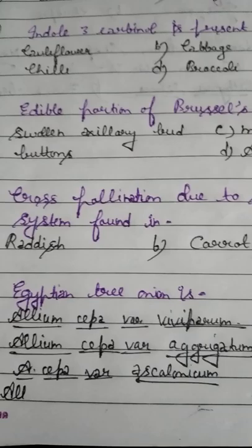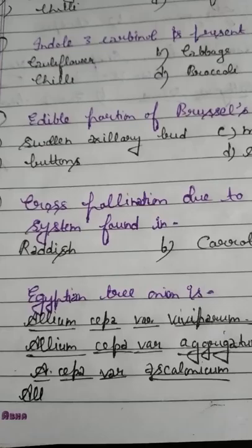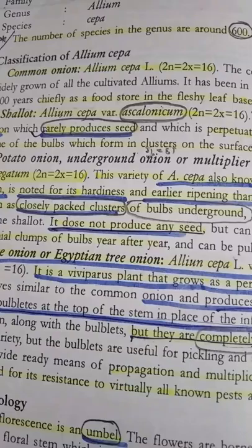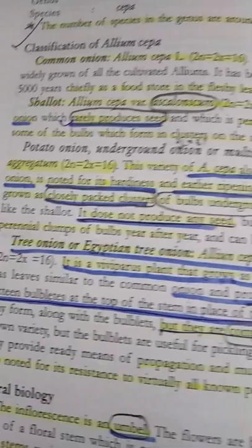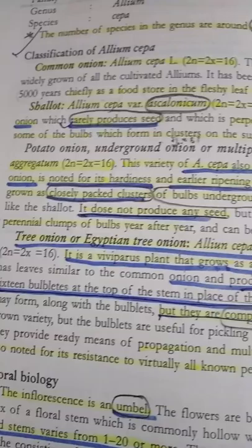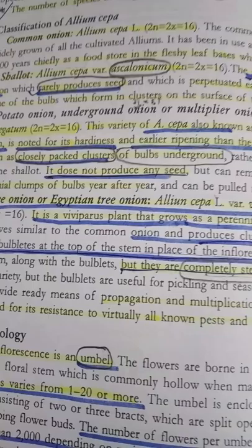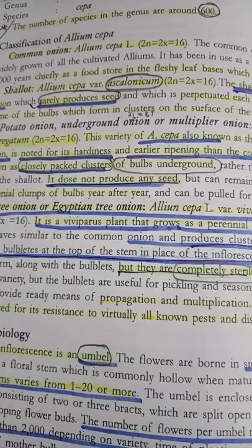Question number 6. Egyptian tree onion is: Option A: Allium cepa var. viviparum. Option B: Allium cepa var. aggregatum. Option C: Allium cepa var. ascalonicum. Classification: common onion is Allium cepa; shallot is Allium cepa var. ascalonicum; potato onion/underground onion/multiplier onion is Allium cepa var. aggregatum; and tree onion or Egyptian tree onion is Allium cepa var. viviparum. The inflorescence type in Allium cepa is umbel.